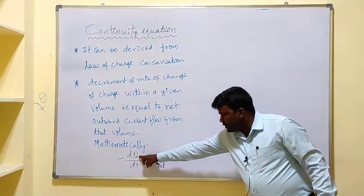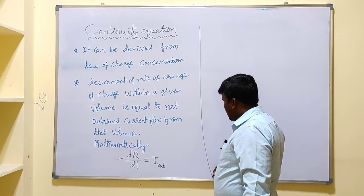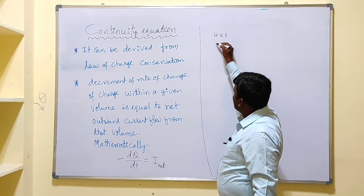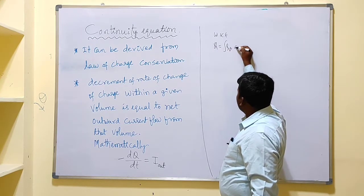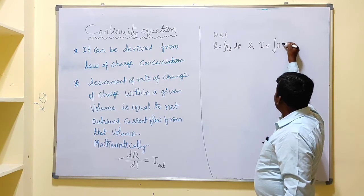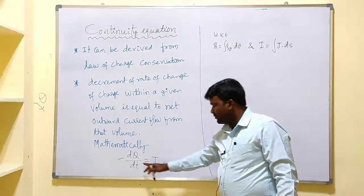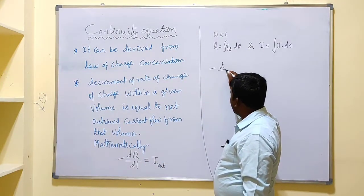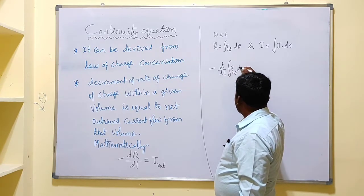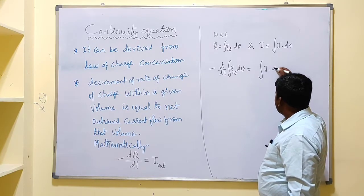Now let us represent Q in terms of charge density and current i in terms of current density. We know that Q equals the volume integral of ρv dV, and i equals the surface integral of J·dS. Substituting into the equation, we get: minus d/dt of the integral of ρv dV equals the integral of J·dS.